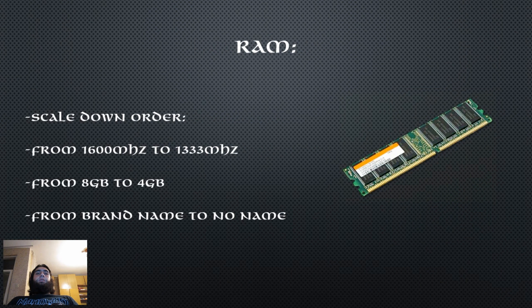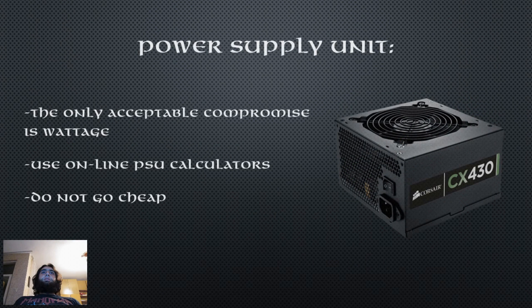Third up is the RAM. There are three ways you can scale down the RAM: by speed, by quantity, and by brand. 8GB of DDR3 1600MHz is the sweet spot but you can save a couple of bucks with 8GB of DDR3 1333MHz. The second solution is sacrificing quantity and getting a 4GB kit — this is an acceptable compromise but considering the RAM requirements of current and future games you could be looking at a RAM upgrade in the near future. Finally you could save a few dollars by going with no-name RAM. Fourth on the list is the power supply — there is only one acceptable sacrifice you can make when it comes to power supplies: wattage.